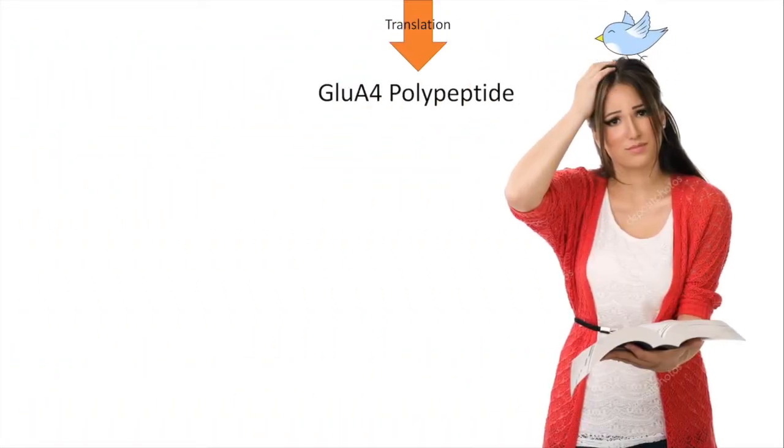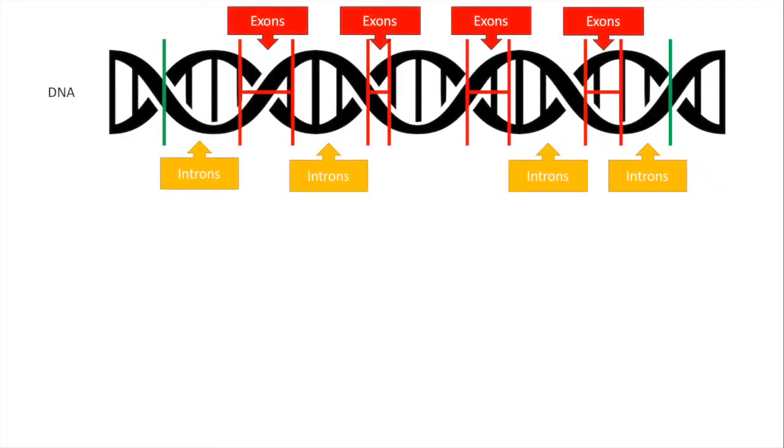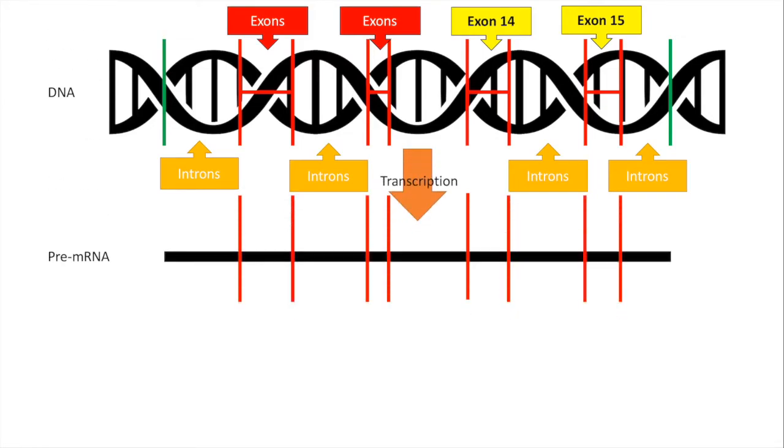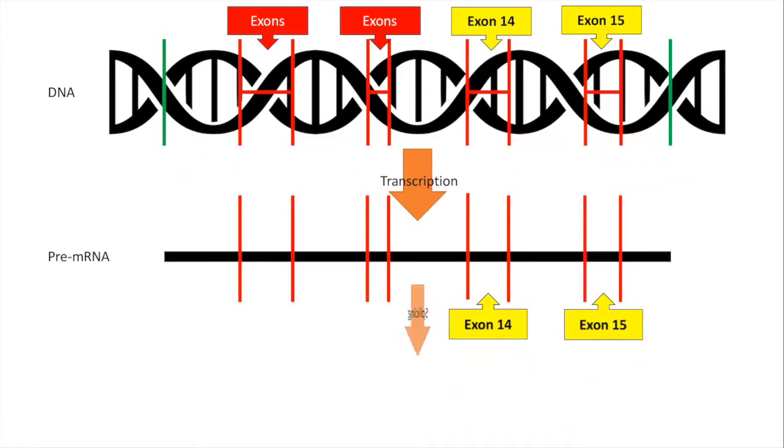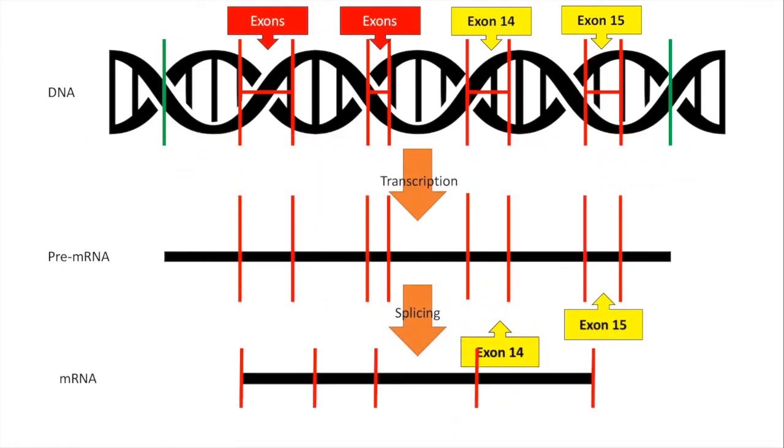This may be confusing, but if you understand this mechanism, you will understand where we get these variations from. Let's go back to the DNA. But this time, you have these two important exons called exon 14 and exon 15. Which what happens when splicing occurs? If exon 14 remains, it is a flip. If exon 15 remains, it is a flop.